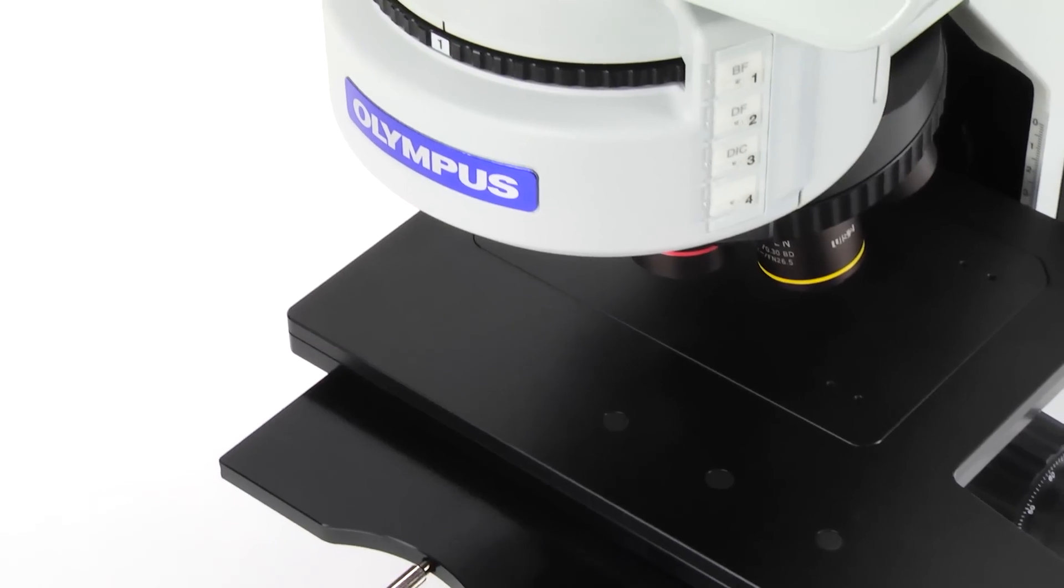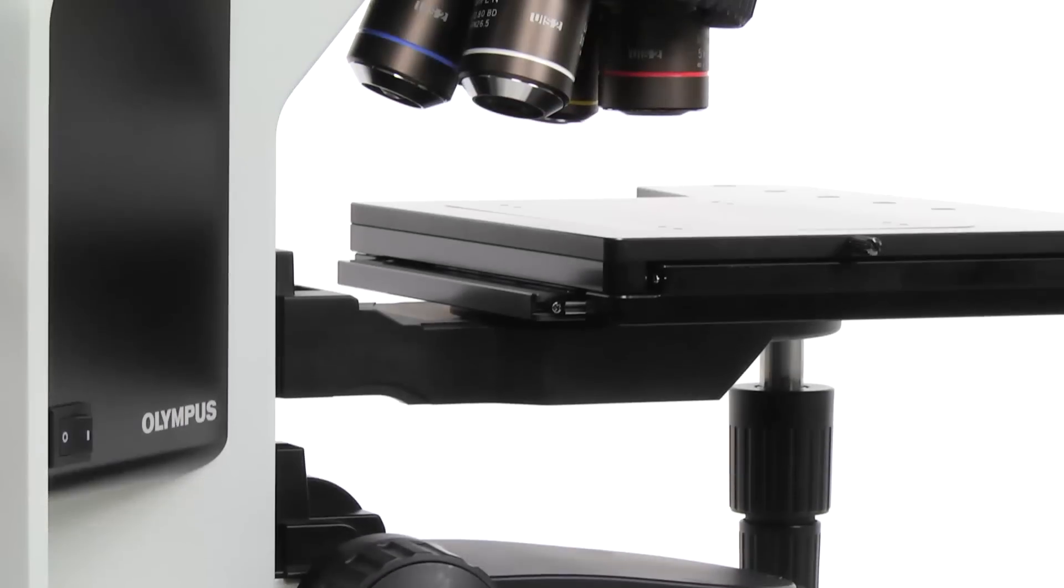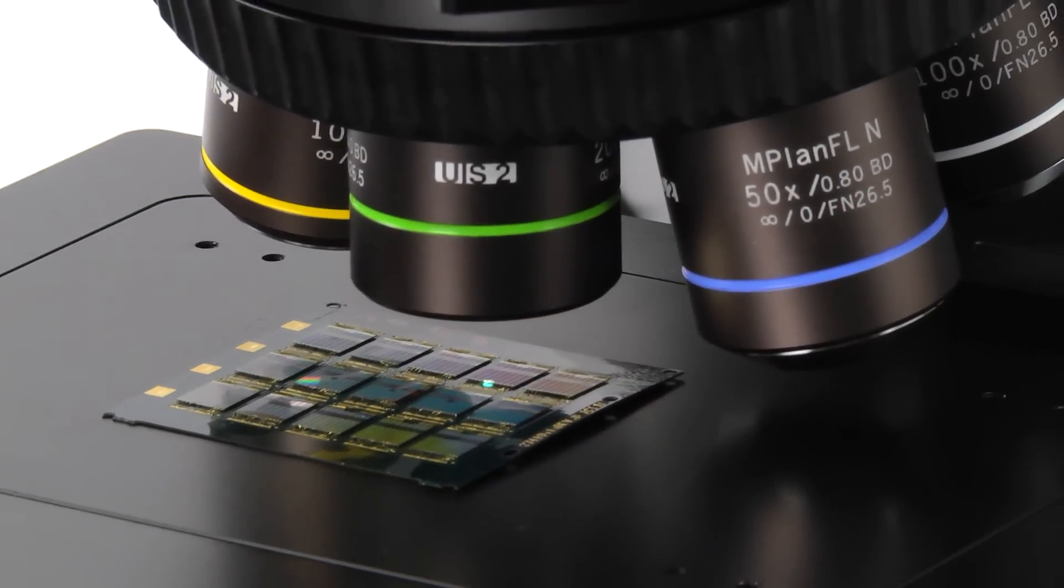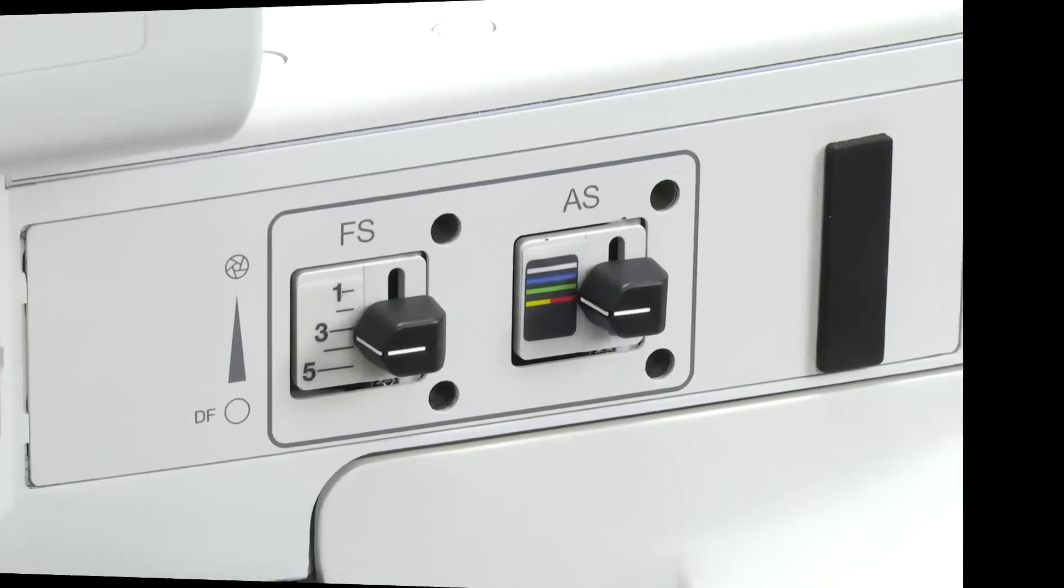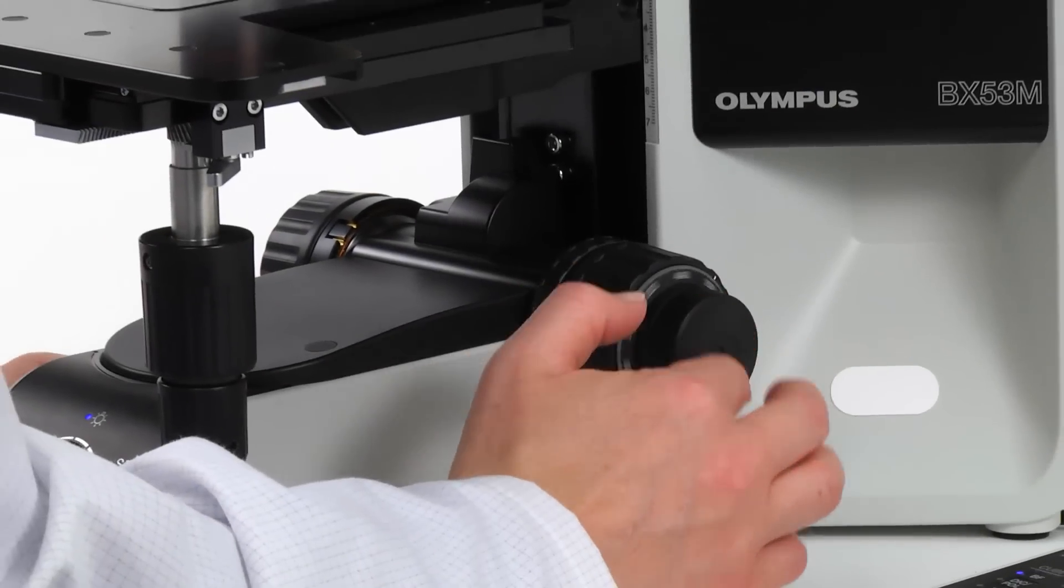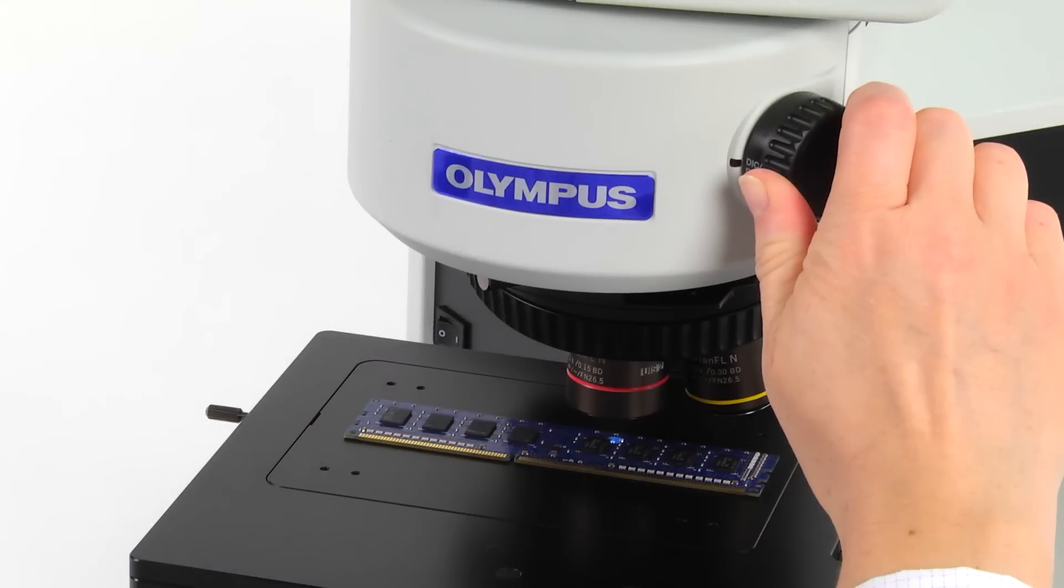The Olympus BX3M series of upright microscopes has been developed and designed for industry and materials science. Newly configured hardware guides the user to achieve optimal illumination and focus, making the microscope easy to operate.